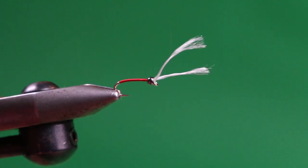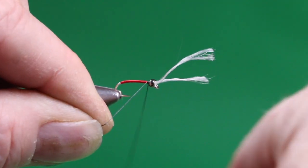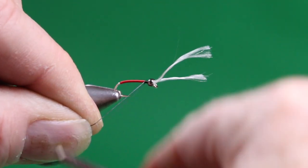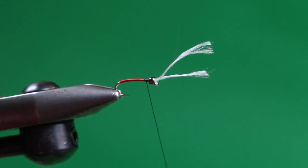So we've tied that off. Now we're going to introduce some black UTC-70. This is the primary body color. So we'll just get that started. Come in. Nip that off.